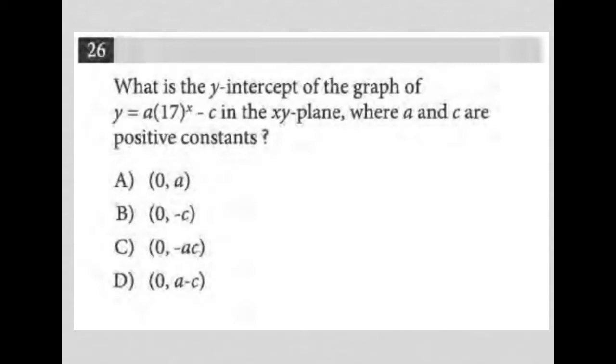So this question says, what is the y-intercept of the graph of y equals a to the 17x? I'm going to write it down. y equals a of 17, or times 17 to the x power minus c in the xy plane where a and c are positive constants.